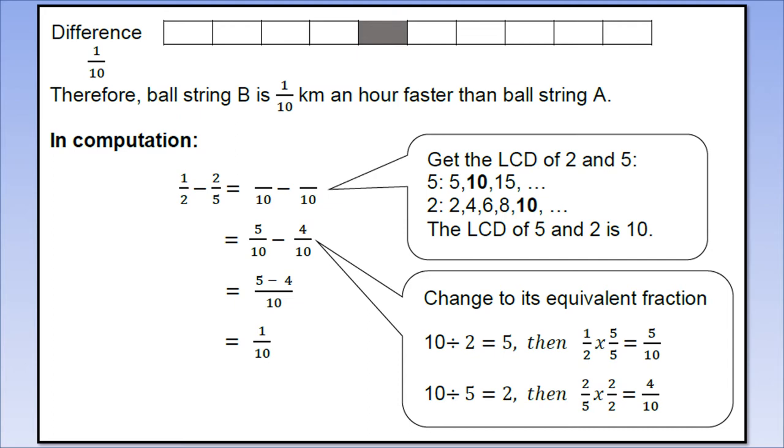Now, how are we going to solve this using computation? It will be like this: 1/2 minus 2/5. In addition, we said we can't add dissimilar fractions. The same rule applies to subtraction of fractions. What are we going to do? We must find the least common denominator. How do we find the LCD? We list their multiples. The two denominators, 2 and 5, we will find their multiples until we find the same number, the smallest that can multiply both. Let's start with 5: multiples of 5 are 5, 10, 15, and so on. Multiples of 2 are 2, 4, 6, 8, 10. Notice there are two numbers that are the same - 10. Therefore, the LCD of 5 and 2 is 10.